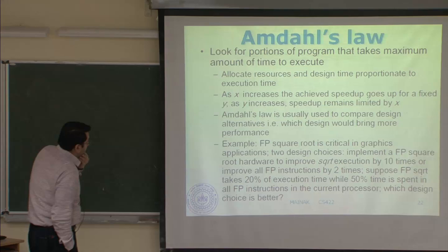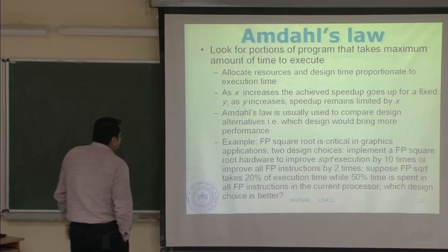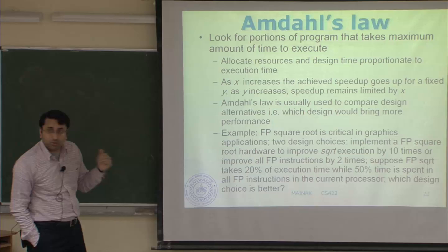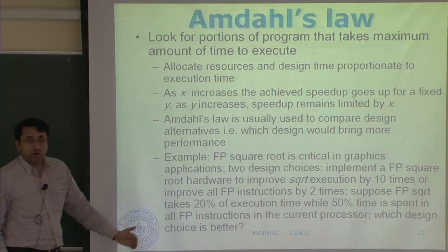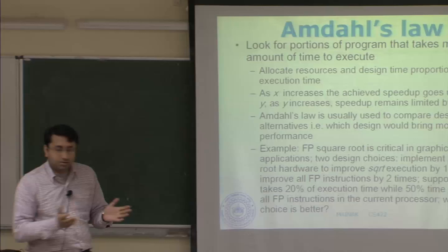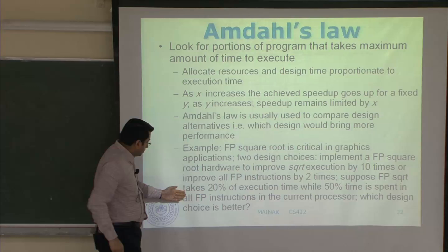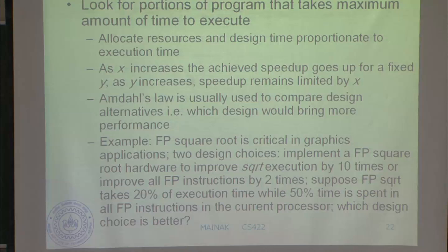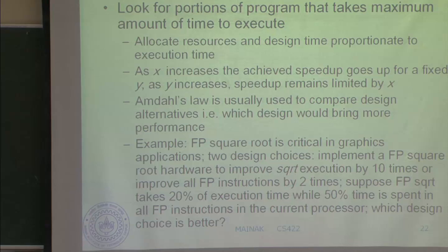Let's take a simple example. Floating-point square root is critical in graphics applications. Two design choices exist: first, add floating-point square root hardware to improve square root execution by 10 times; second, improve all floating-point instructions by 2 times. Suppose floating-point square root takes 20% of execution time, while 50% of time is spent in all floating-point instructions. Which design choice is better?